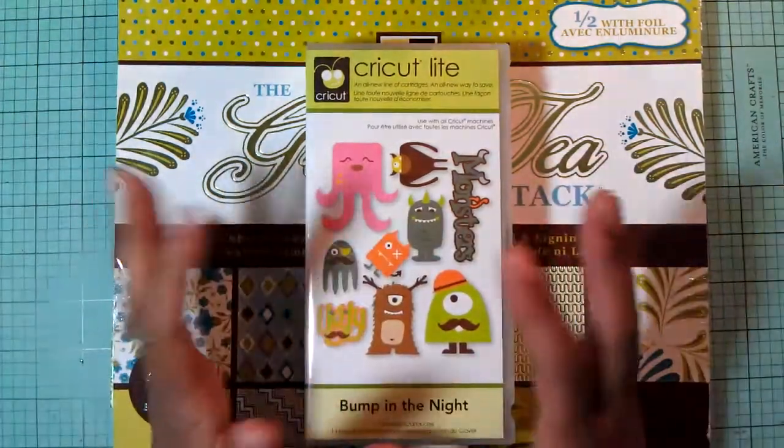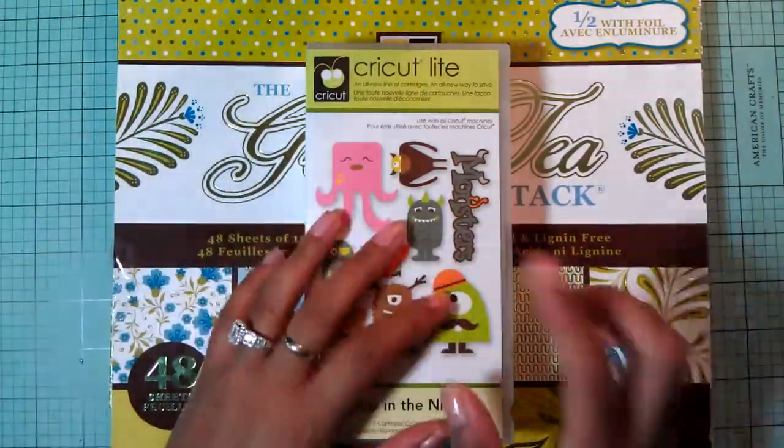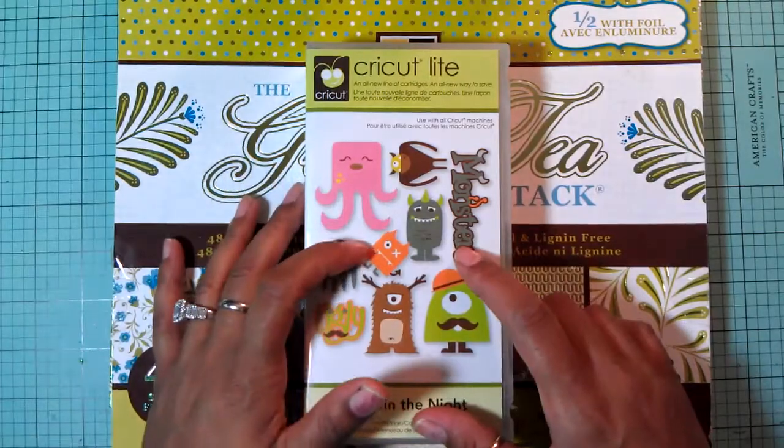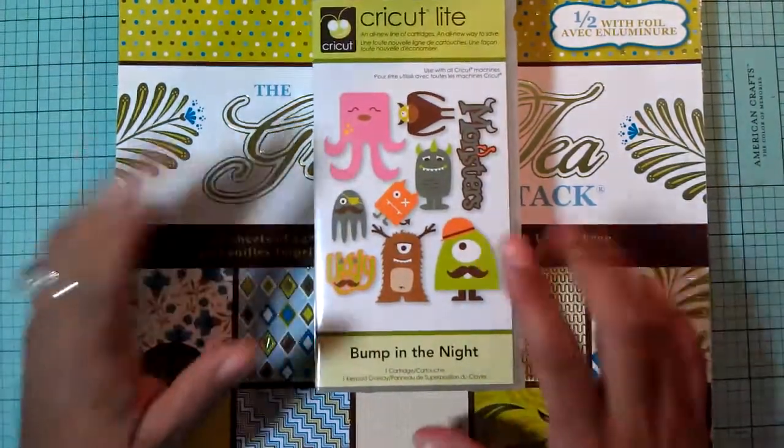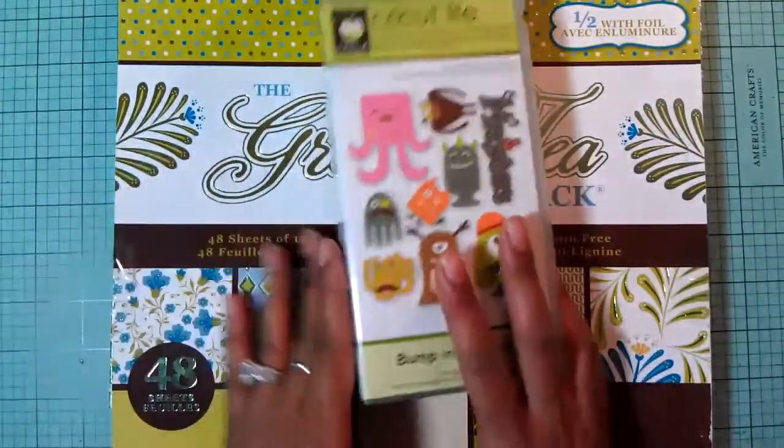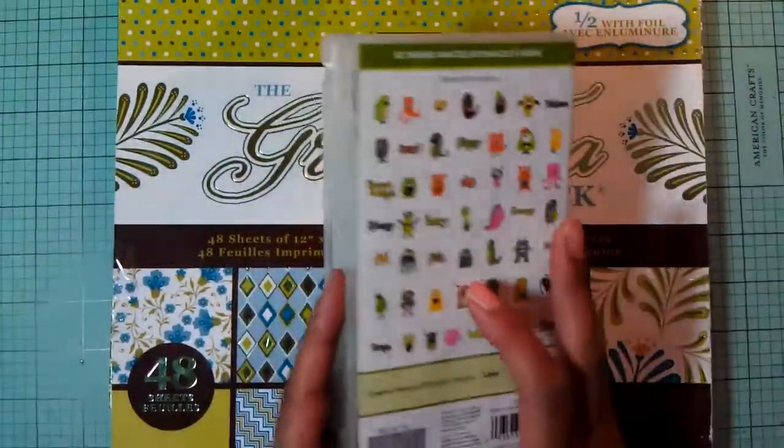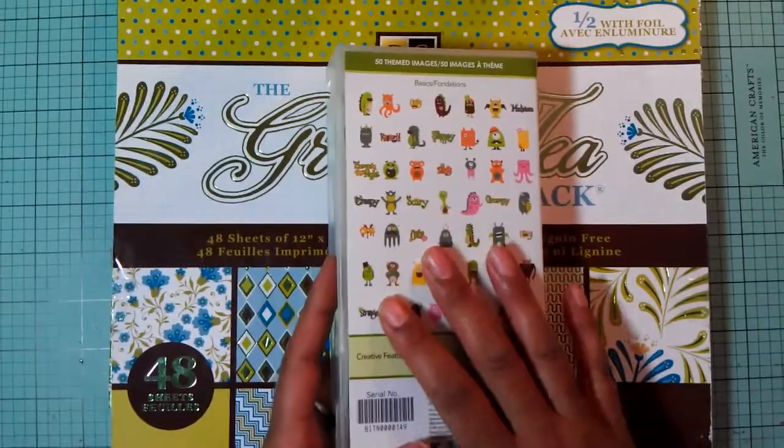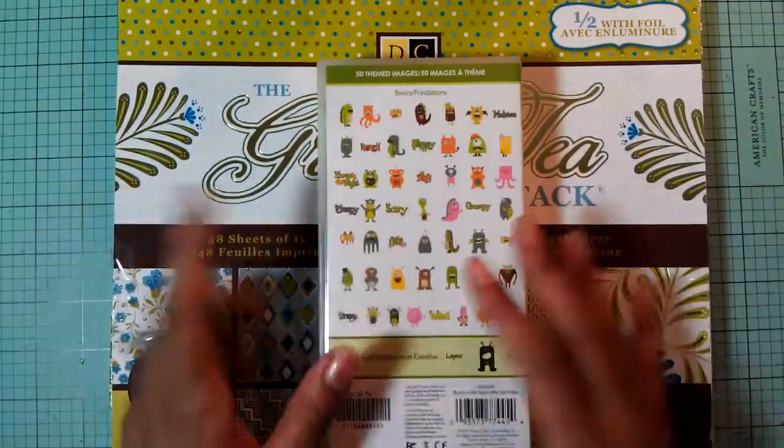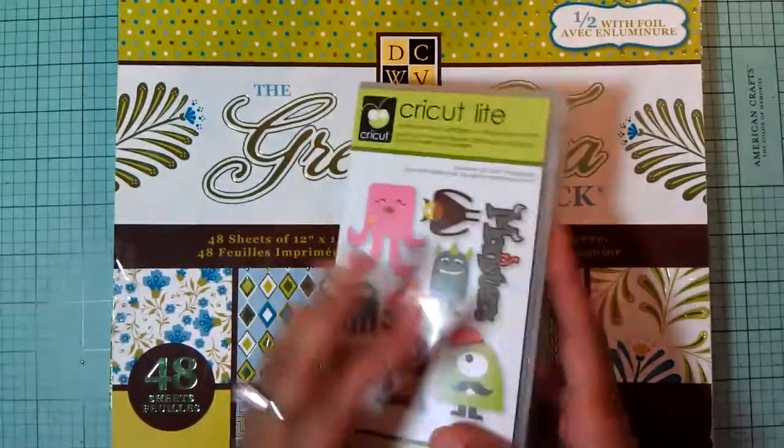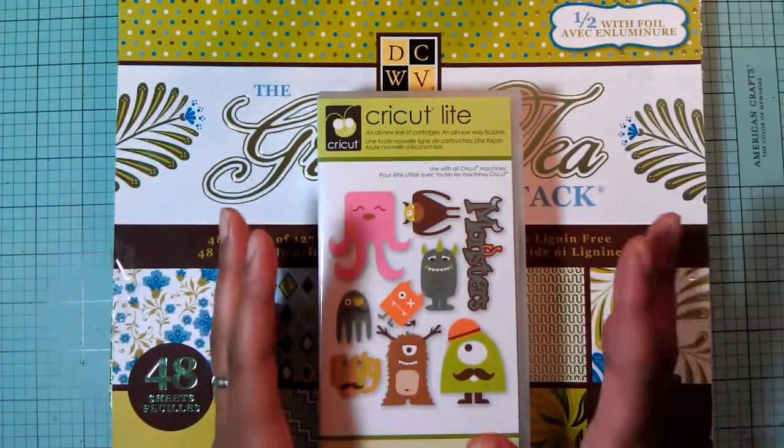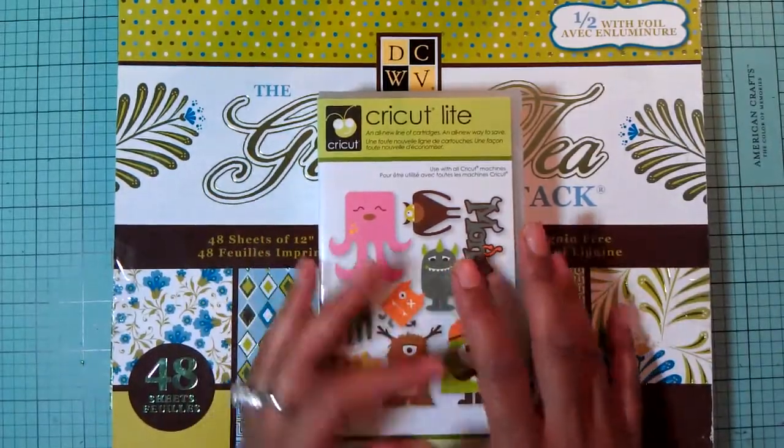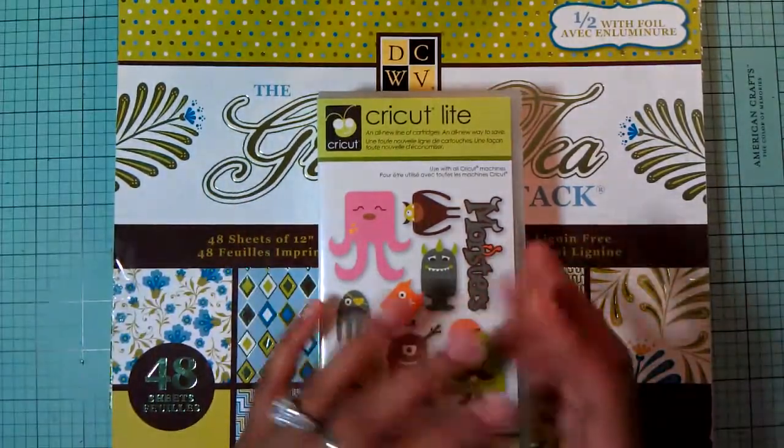Today's video I'm making another Halloween card and I'm using the Cricut Cartridge Light bump in the night. For those of you who don't have this cartridge, this cartridge is really cute. The cuts are really easy and quick to put together which are really awesome for the Cricut Cartridge Lights.